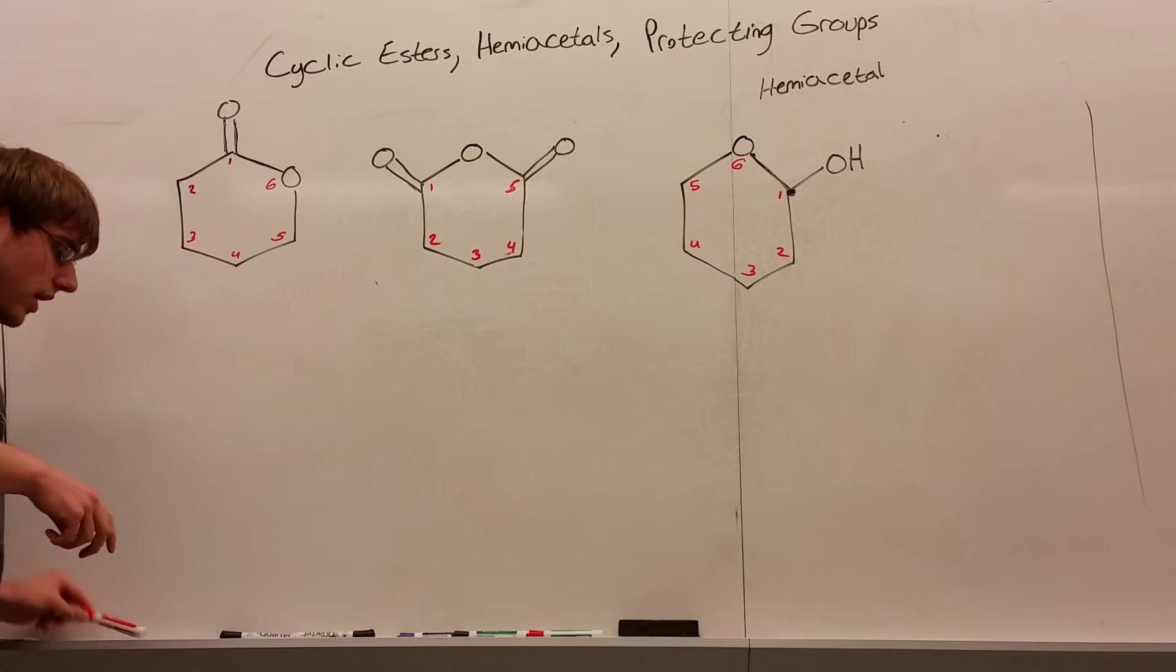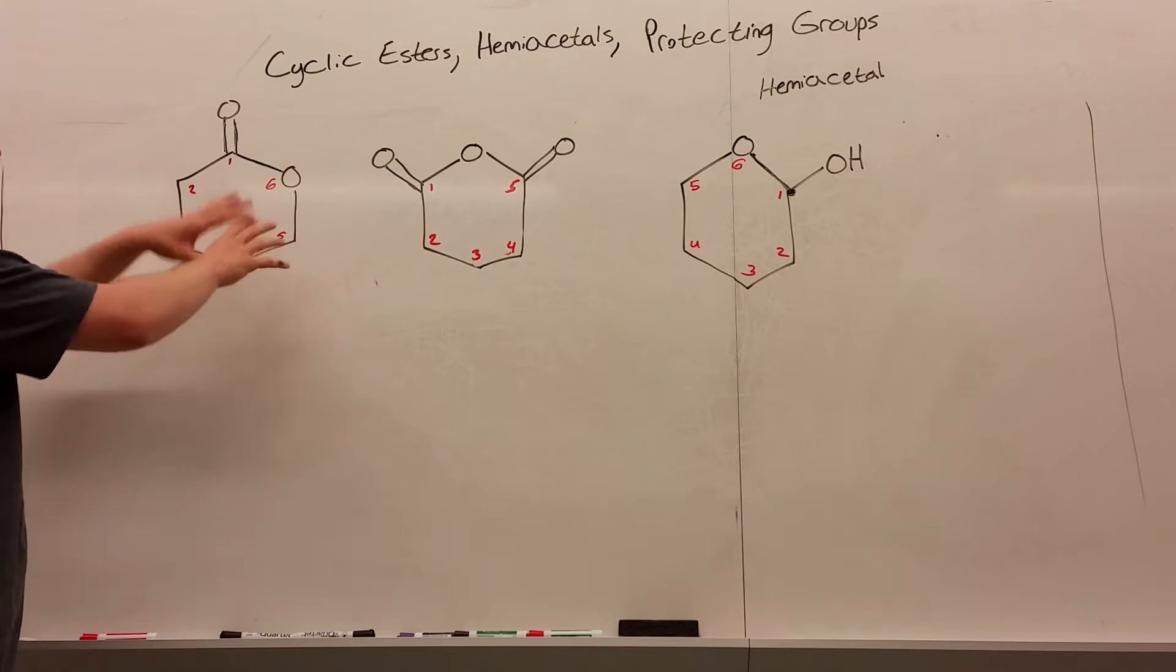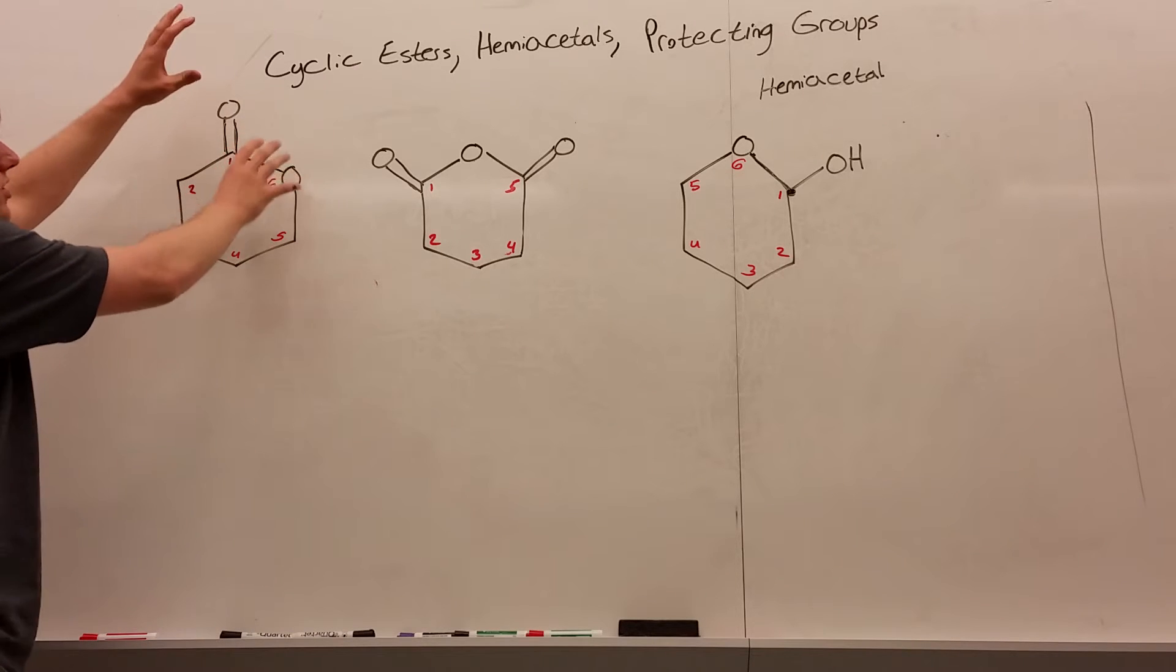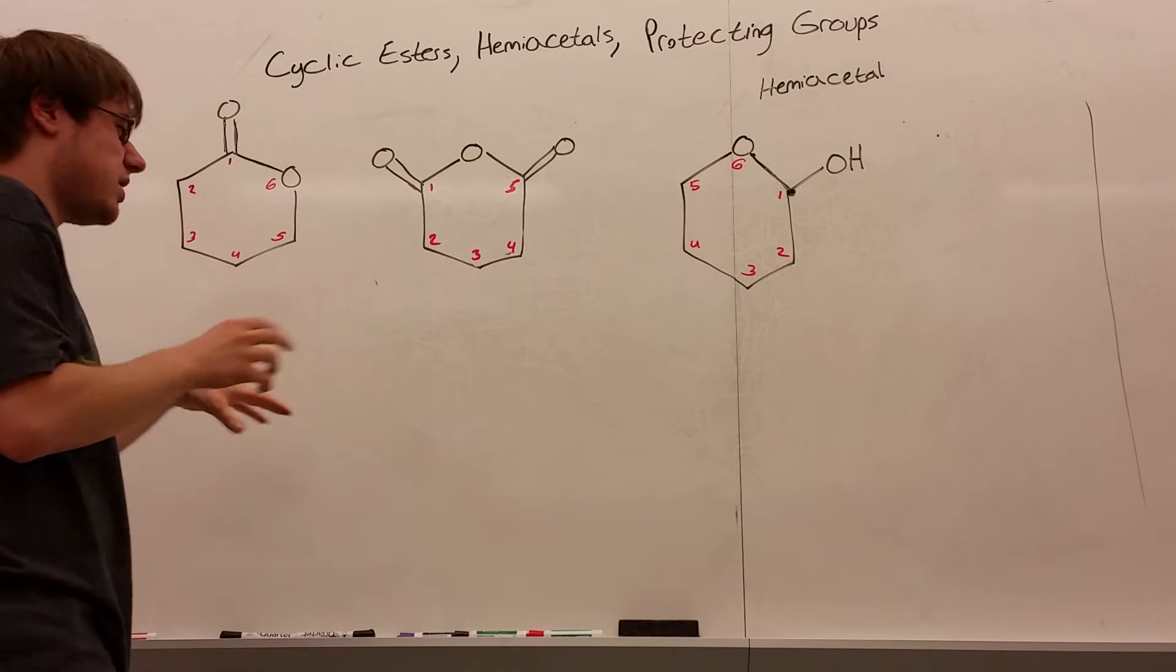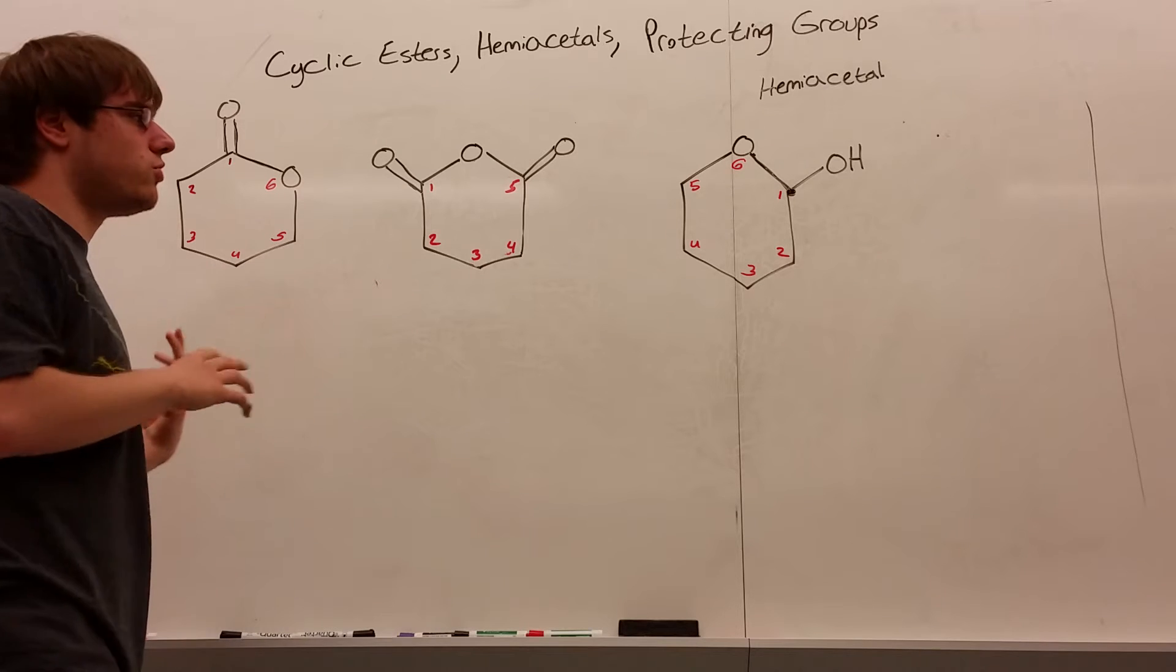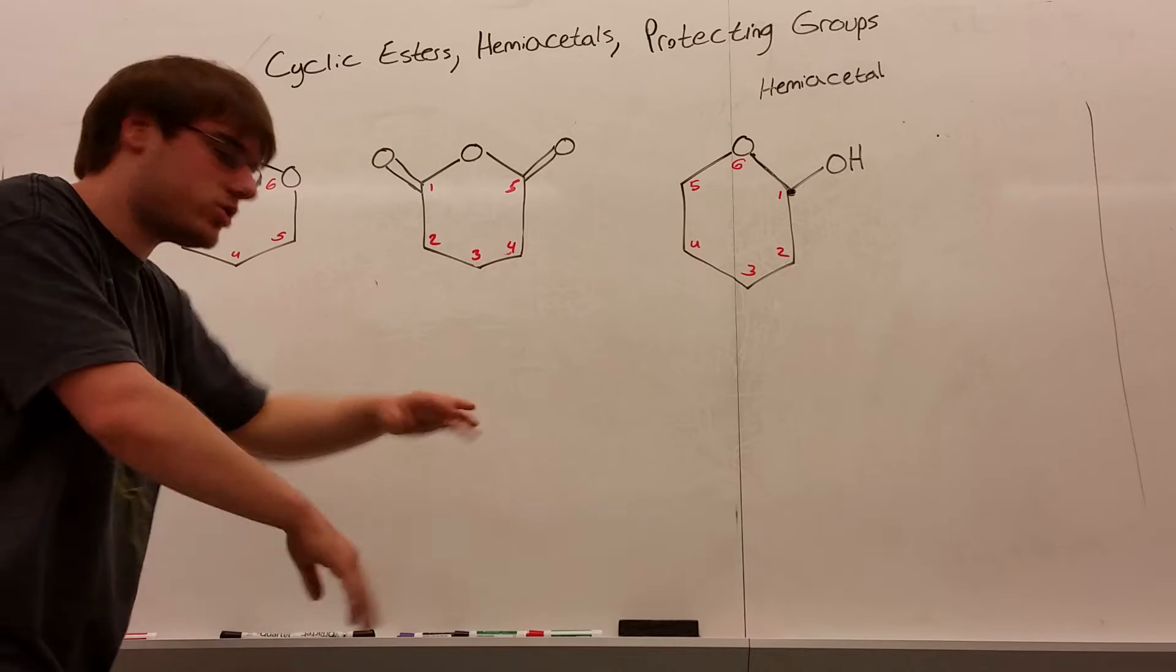So first of all, how do we break these apart? Because obviously we can't synthesize a six-member ring where there are oxygens involved. It's not quite a Diels-Alder product anymore. So we have some extra rules here, and how do we put these together and make them into a carbon chain?